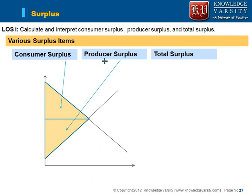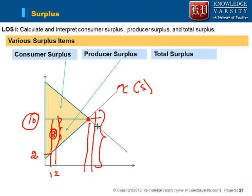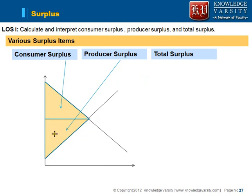Now let us understand what is producer surplus. This is your marginal cost curve or the supply curve. A producer supplying one unit of quantity has a cost of $2 to supply that unit, but he is selling it at $10, so he is actually getting a benefit of $8 — that is the surplus he is generating. Likewise, if he produces a second unit he will generate some surplus, and so on until the equilibrium quantity. Beyond that point he will not generate surplus, because the cost to produce exceeds the price he gets — so he will supply only up to the equilibrium quantity.